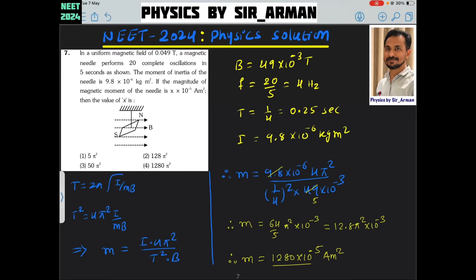Question number 7. In a uniform magnetic field of 0.049 Tesla, a magnetic needle performs 20 complete oscillations in 5 seconds.